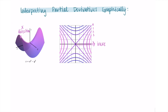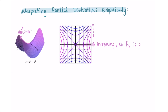So we'd be increasing going in this way, which means the partial derivative with respect to x — that's the rate of change in the x-direction — would be positive. We could write f sub x is greater than 0.